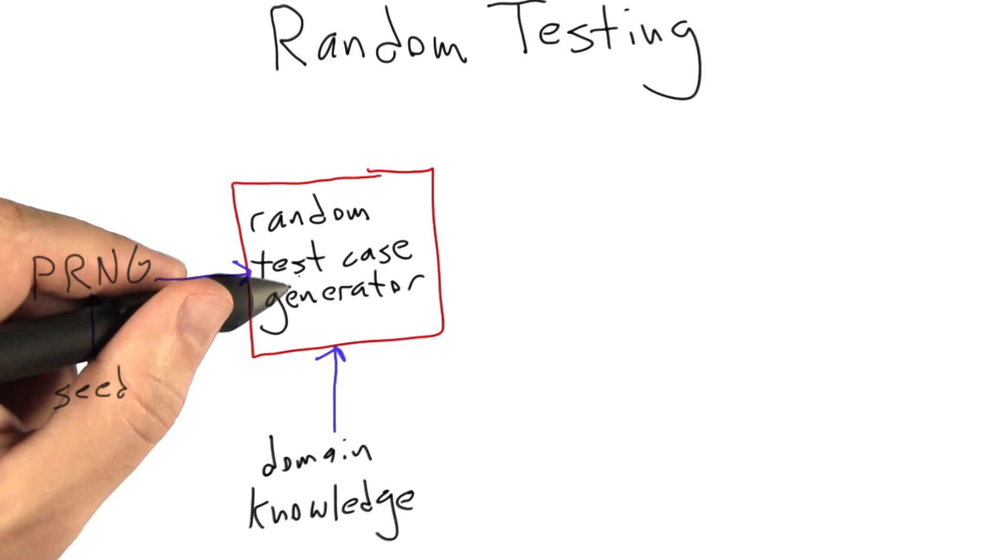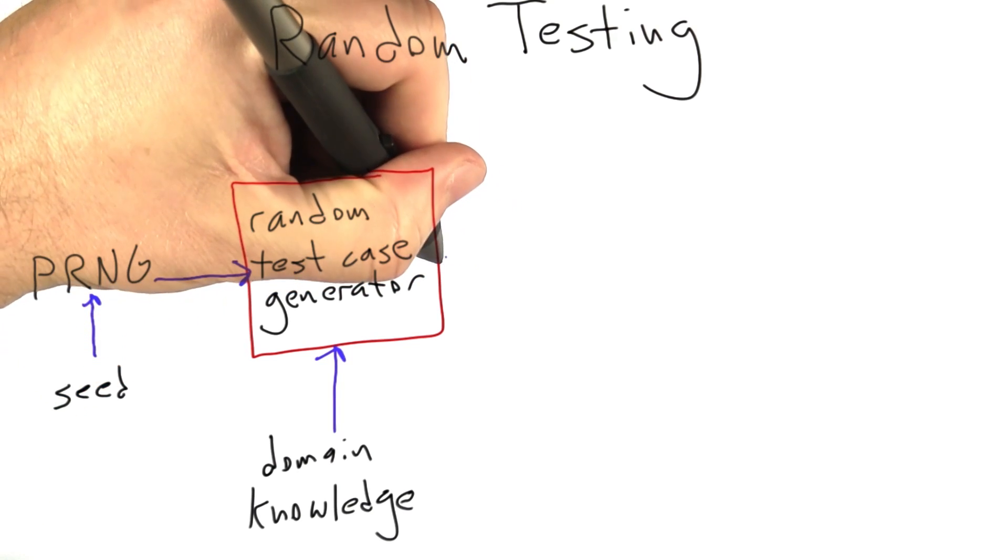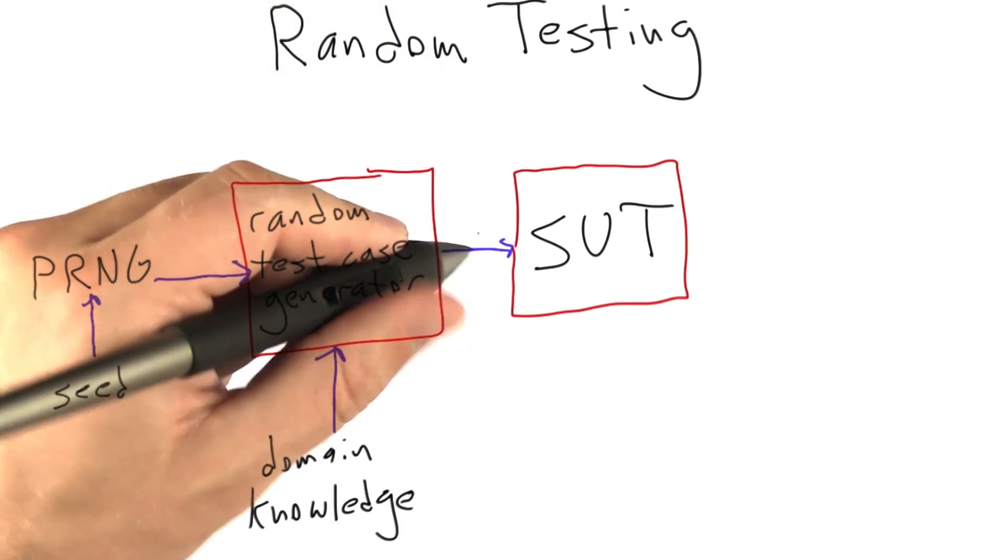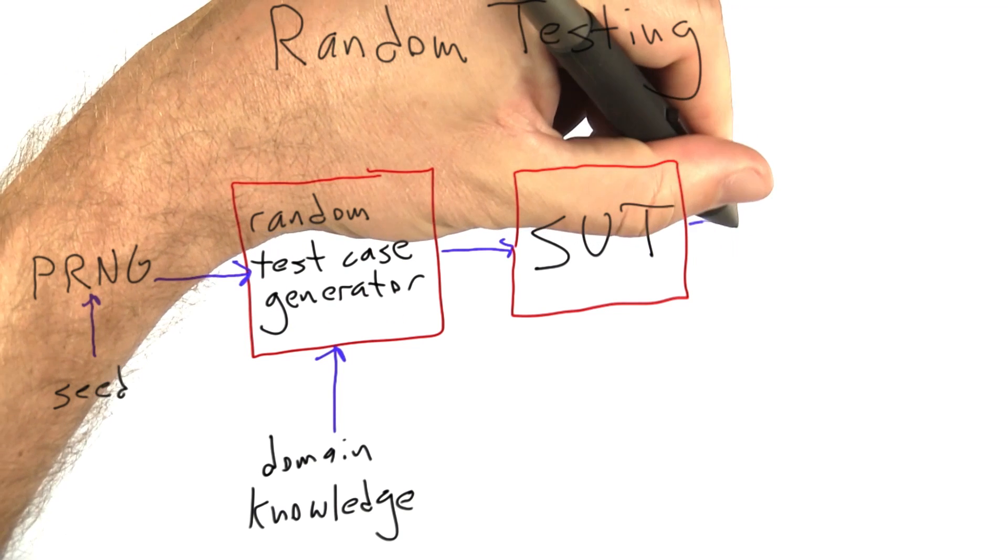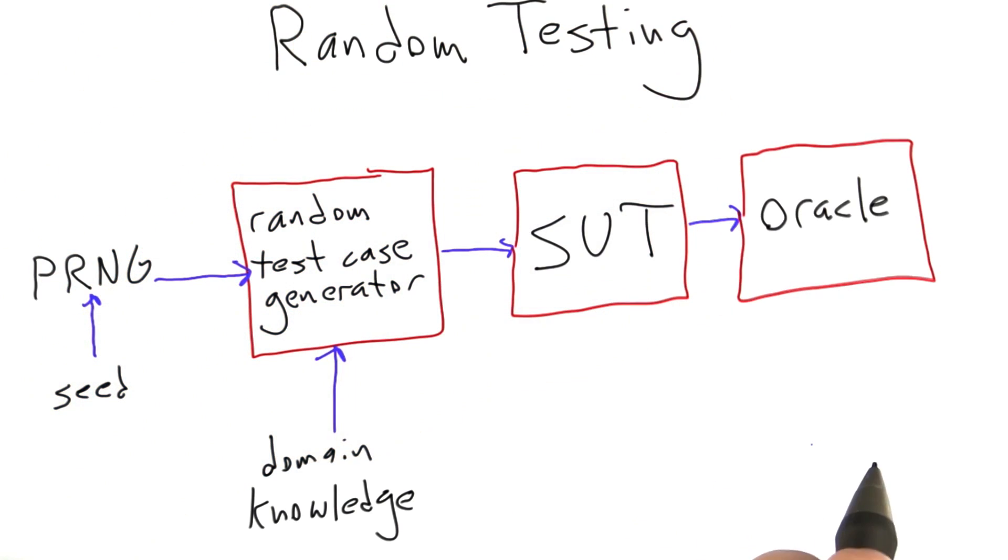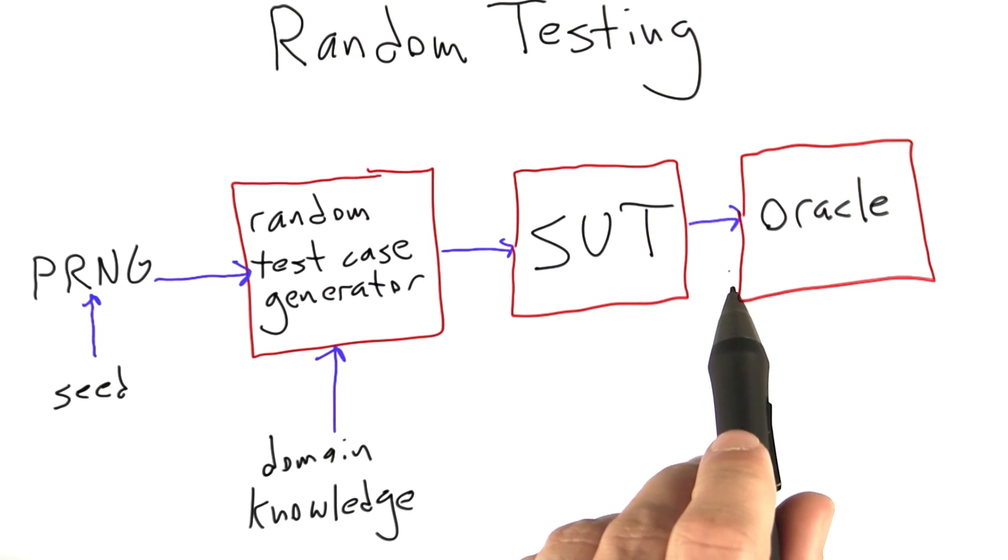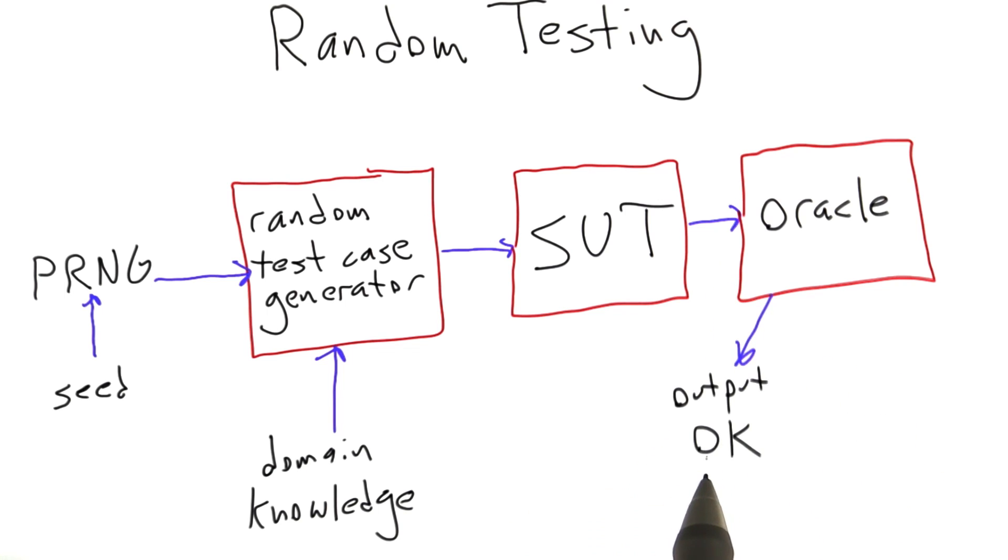Generated test cases come out of the random test case generator and go into the software under test. The software under test executes and produces some output. The output is inspected by a test oracle. The oracle, as we've already learned, makes a determination whether the output of the software under test is either good or bad. If the output is good, that is to say if it passes whatever checks we have, we just go back and do it again.